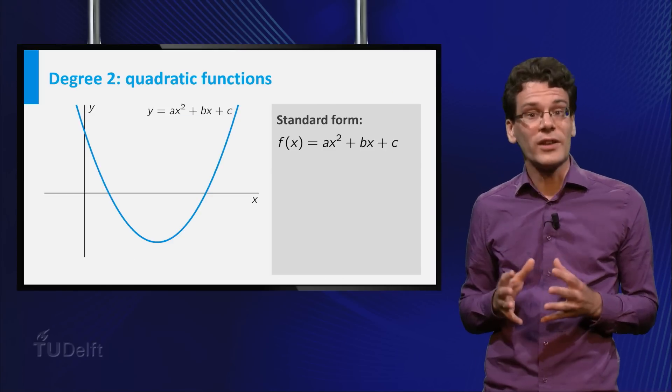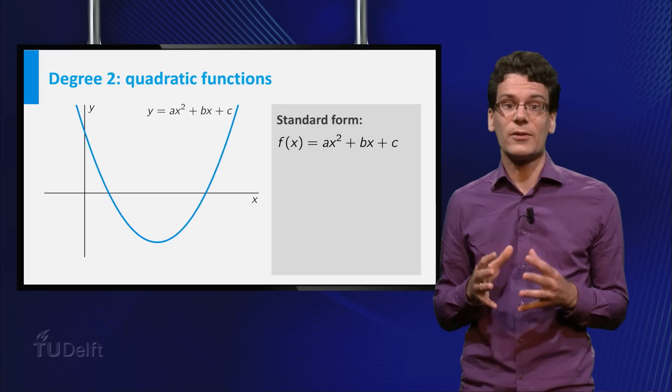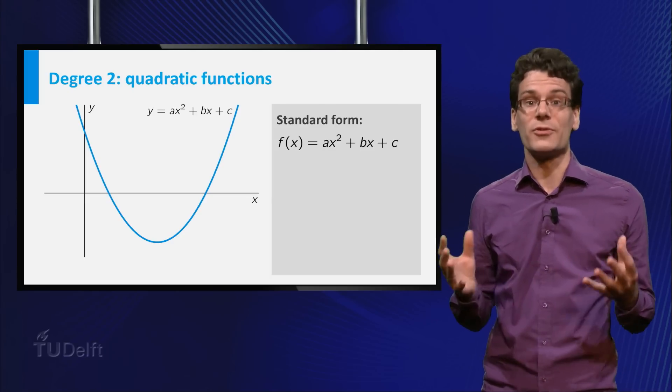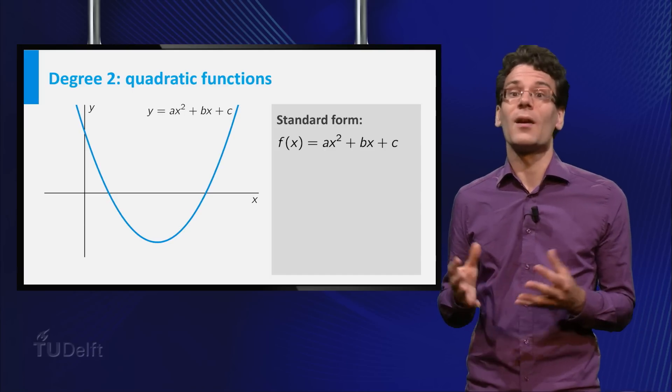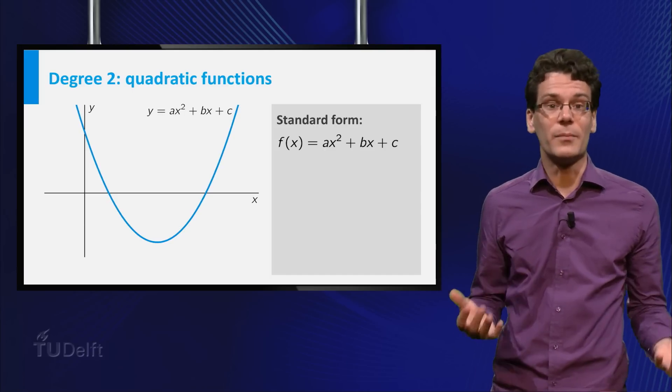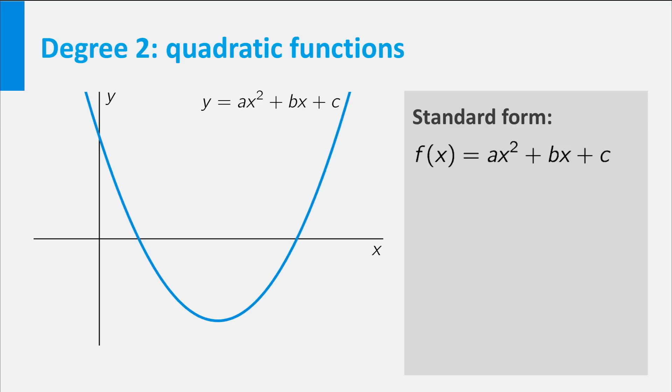The standard form of a quadratic function is f(x) equals ax squared plus bx plus c, where a, b and c are numbers. Let's have a look at the graph of such functions. The shape of the graph of any quadratic function is a parabola. It has precisely one extremum, called the vertex, and it is symmetric in the vertical line through this vertex.